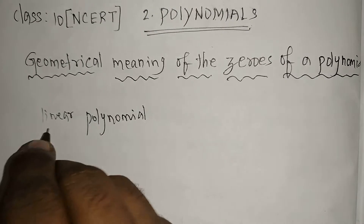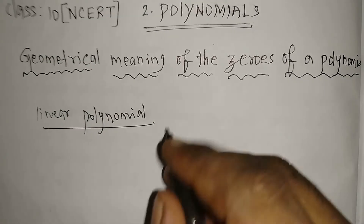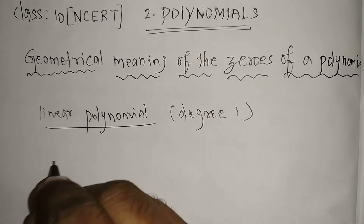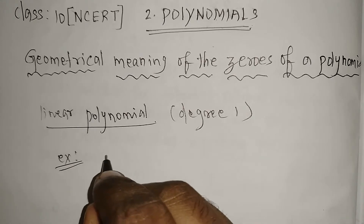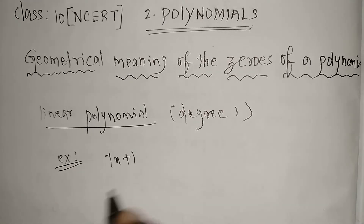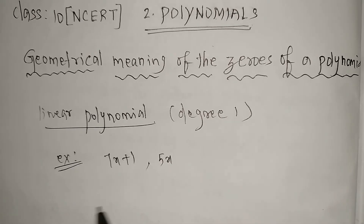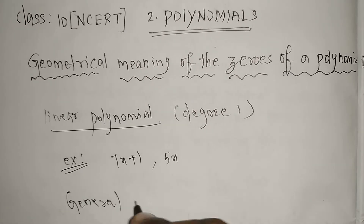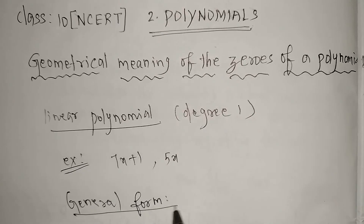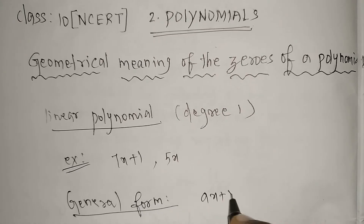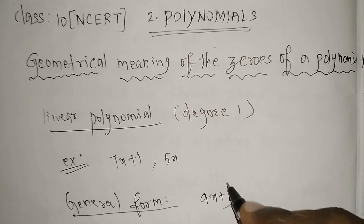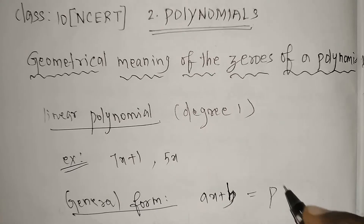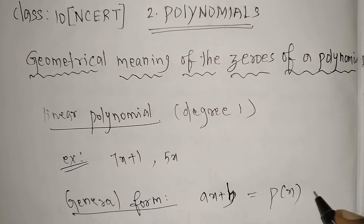Linear polynomial - in the sense, degree one. So the example: suppose I'm taking 7x plus 1, or just 5x - anything you can take. The general form is simply ax plus b. So when writing the polynomial, this is equal to p of x.